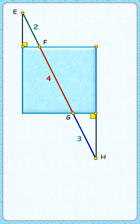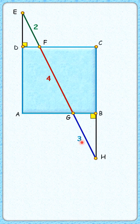This is an interesting question. Can you find the area of a square where the length of line segment EH is 2 plus 4 plus 3 centimeters? Let's check the solution.